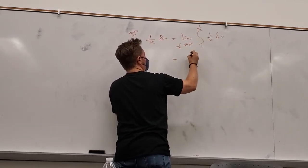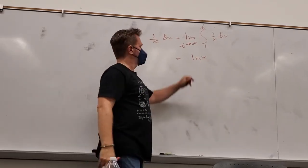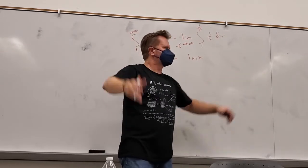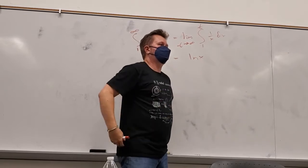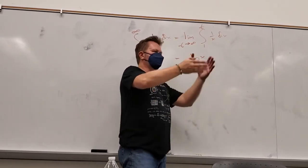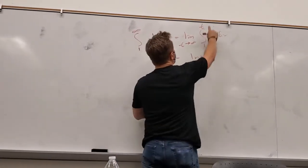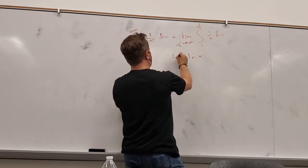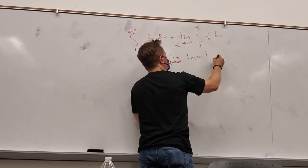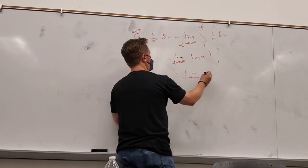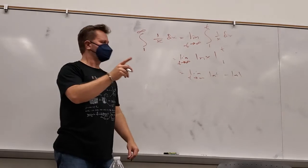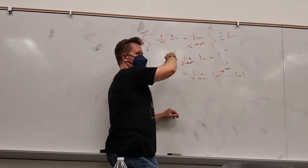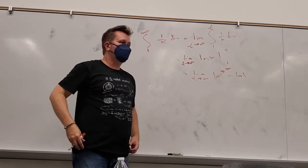The integral of 1/x is ln x. Why no absolute value? Because my inputs are all positive — 1 to infinity — so the argument is always positive. Evaluate from 1 to t: ln(t) minus ln(1). Ln(1) = 0. As t goes to infinity, ln(t) goes to infinity. So this integral diverges to positive infinity. Just about every integral we've done before this section converged — it came out to a finite number.